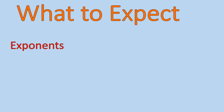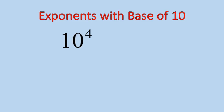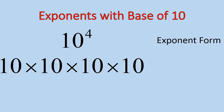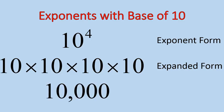So what to expect: we're going to talk about exponents with a base of 10, and then we're going to talk about how that really means we're just moving a decimal. So let's look at it. Exponents with a base of 10. 10 is our base, and 4 is our exponent with this example we have here. When it's written in this way, we call that exponent form. What that means is 10 times itself 4 times, and that's written in expanded form. Then if we actually write this out, what is this number? The number is 10,000, and that's in standard form.